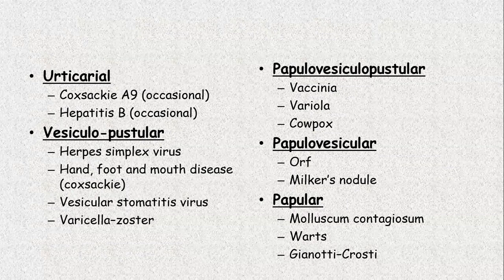Urticarial rash — urticarial-like rash occurs because of coxsackie A9 and hepatitis B occasionally. Then comes a vesiculopustular rash, which is seen in herpes simplex virus, in varicella zoster virus, and in hand, foot, and mouth disease due to coxsackie A9 and vesicular stomatitis virus.